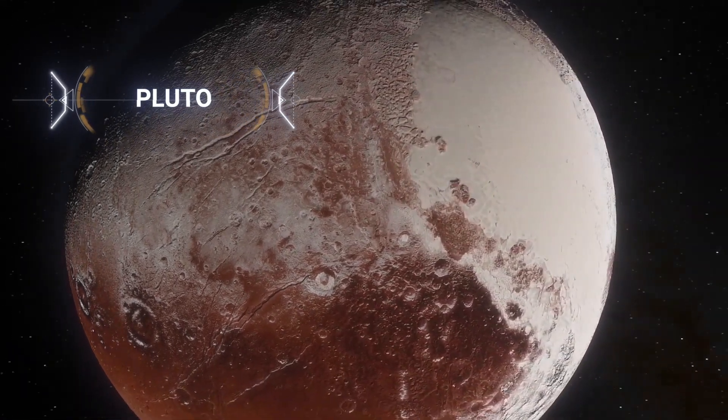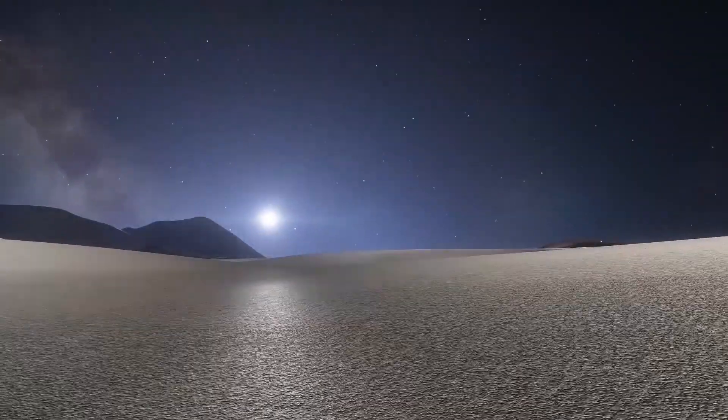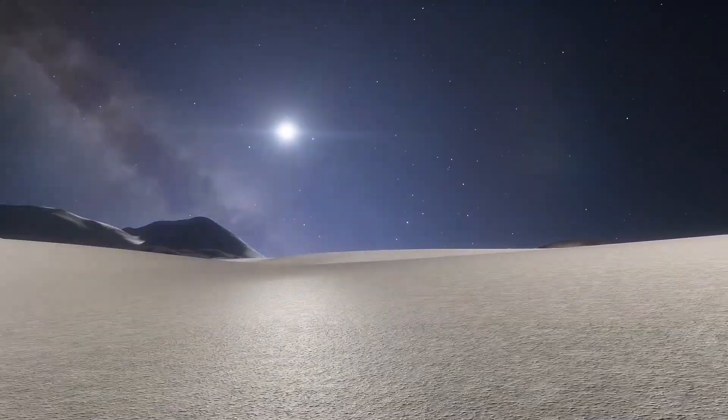We will now travel out to near the very edge of the solar system. The dwarf planet Pluto orbits the sun at an average distance of nearly 4 billion miles. Temperatures on Pluto are only 40 degrees Celsius above absolute zero.